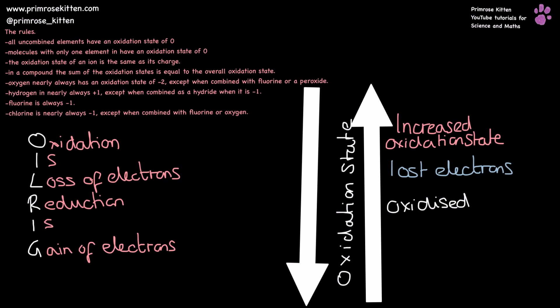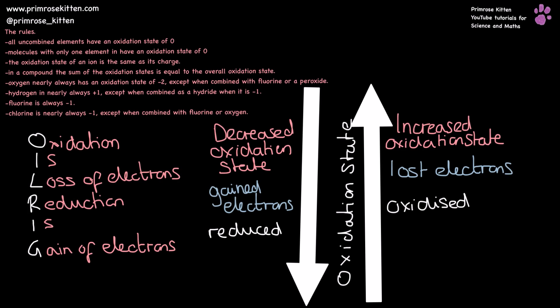Working on from that, we can say that if something has increased its oxidation state, it has lost electrons so it has been oxidised. And if something has decreased its oxidation state, it has gained electrons and been reduced.